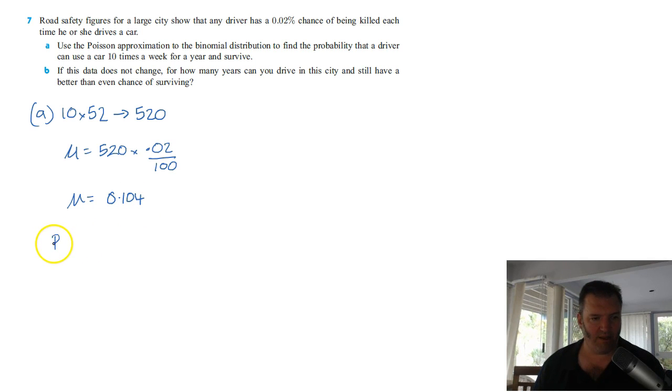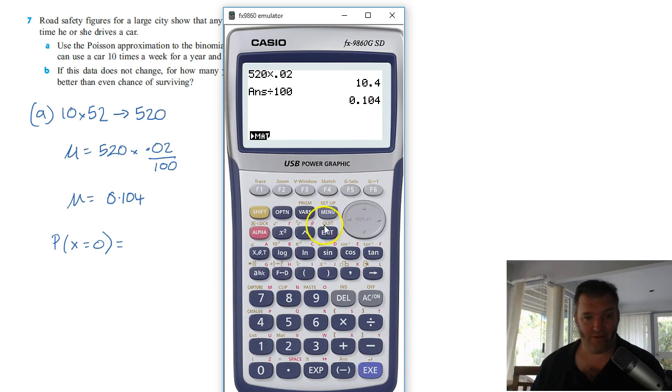So, the probability that the number of deaths equals 0 is what we're after, isn't it? We can't really die more than once. So, if you want to survive the year, we're doing Poisson distribution.